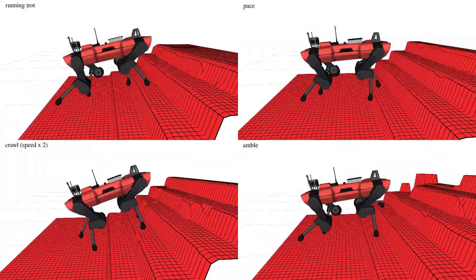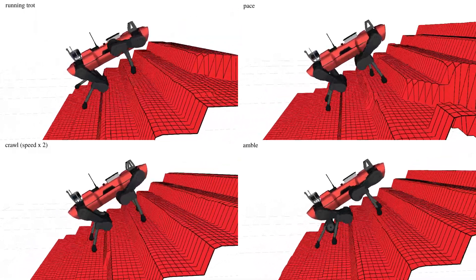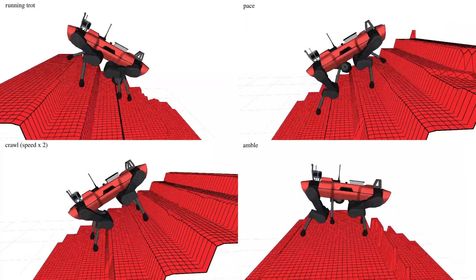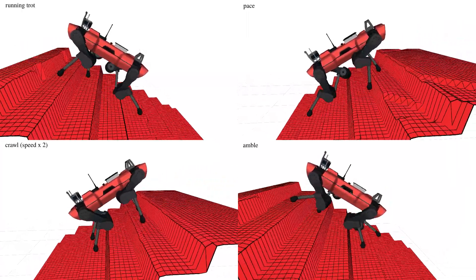We can generate motions in rough environments for a variety of different dynamic gaits, including running trot, pace, and amble.